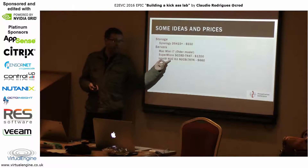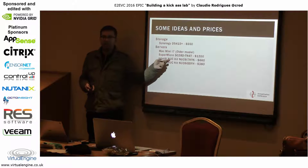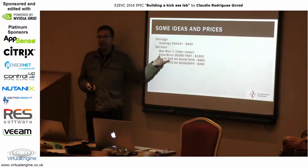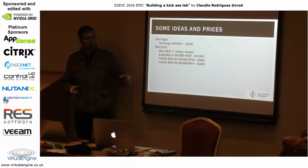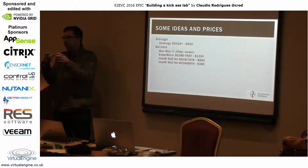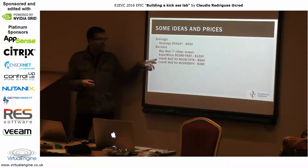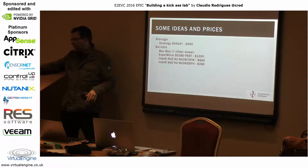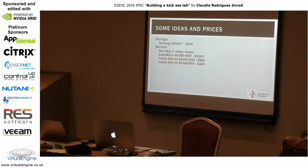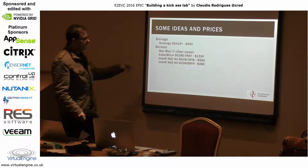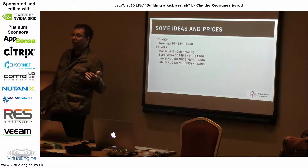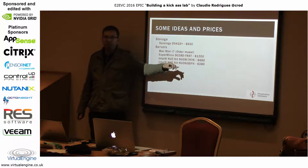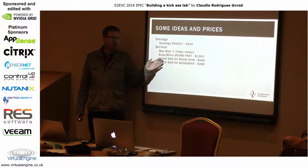Then we have the new Intel NUC — two versions here. This one is the latest with an i7 CPU and decent Intel Iris integrated graphics. The second version looks more like a little cube, like the Panologic units of the past. The latest one running i7 is $660 without any storage or memory. As soon as you add memory — it takes up to 32 gigs — and add storage, you're probably talking about $1,100 for this unit.